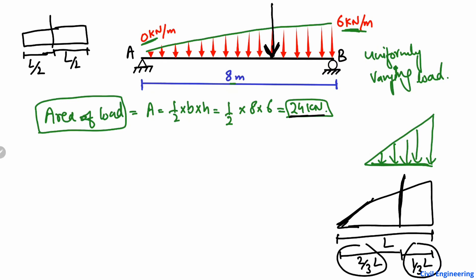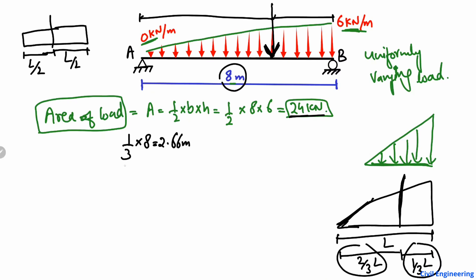The 24 kilonewton load is acting at the centroid, but we need to find that distance. This distance equals one-third of 8, which is 2.66 meters. The other distance is two-thirds of 8, which is 5.33 meters. We mainly need the 2.66 meter value for our calculations.